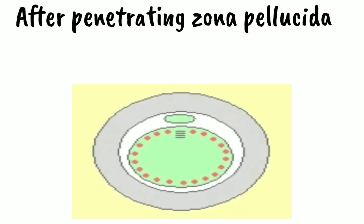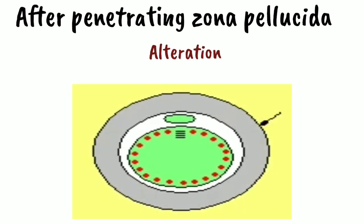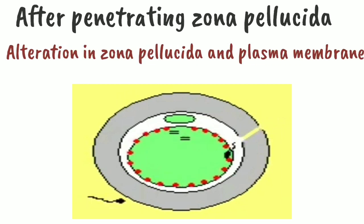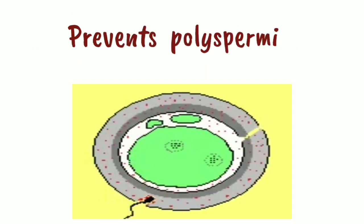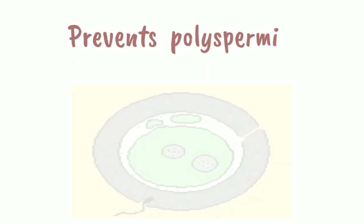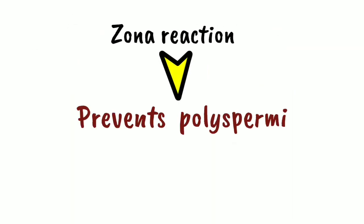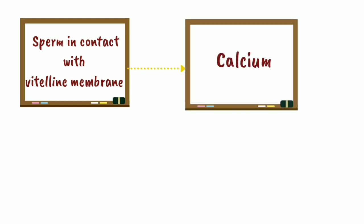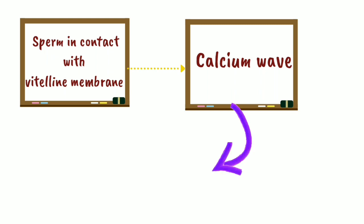After the sperm penetrates the zona pellucida, there is an alteration in the plasma membrane and the zona pellucida so that other sperms cannot enter — this prevents polyspermy and the process is known as the zona reaction. Contact of the sperm with the vitelline membrane causes a calcium wave in the oocyte cytoplasm, after which there is nuclear fusion.